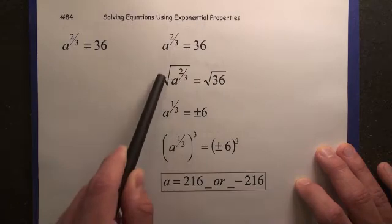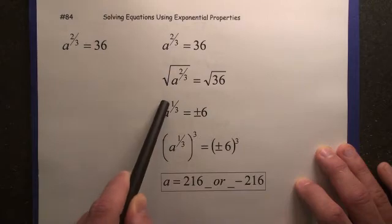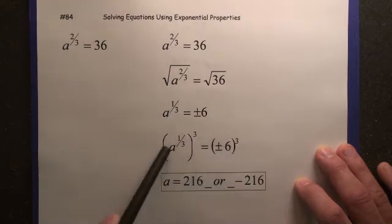Now, by square rooting 2/3rds, the 2 and the square root cancel down to a 1. So now all we have to do is raise both sides to the 3rd power.